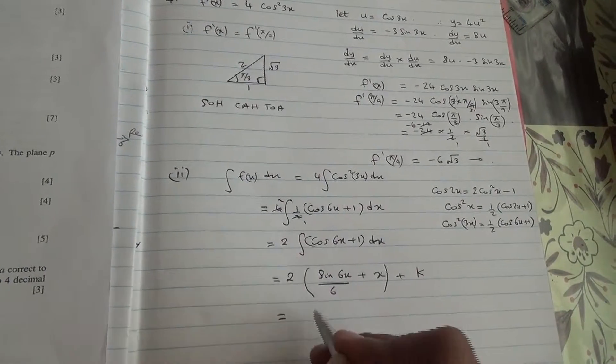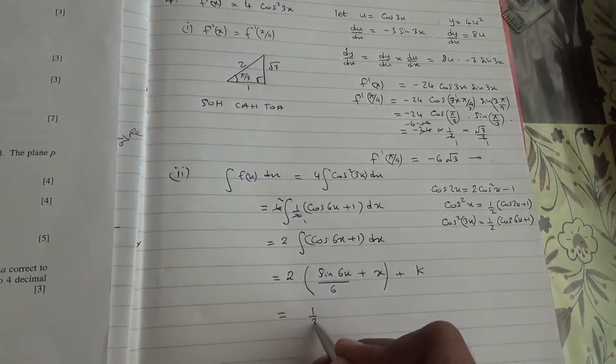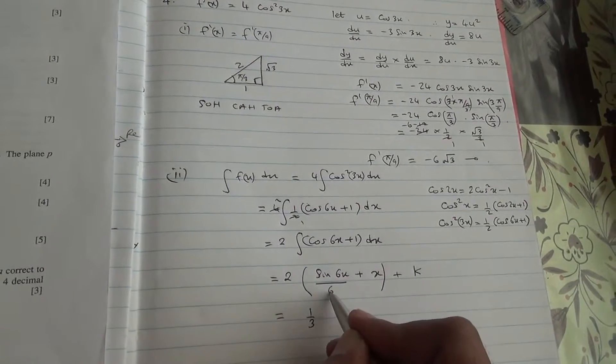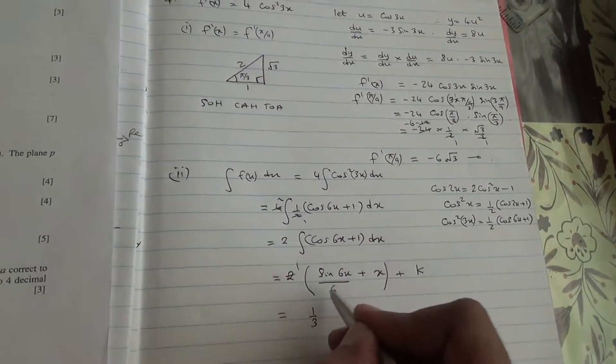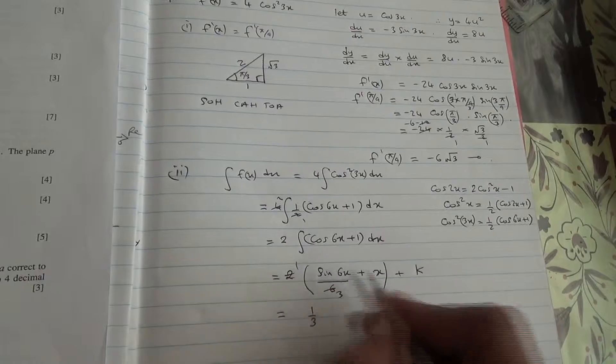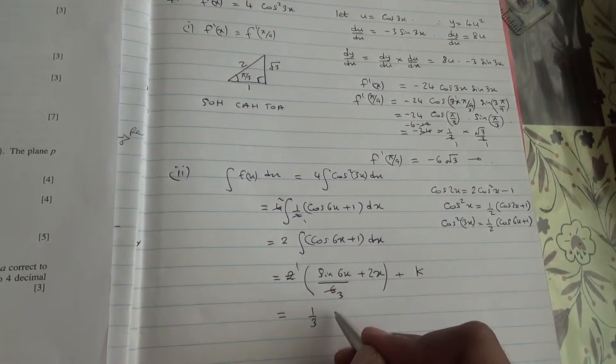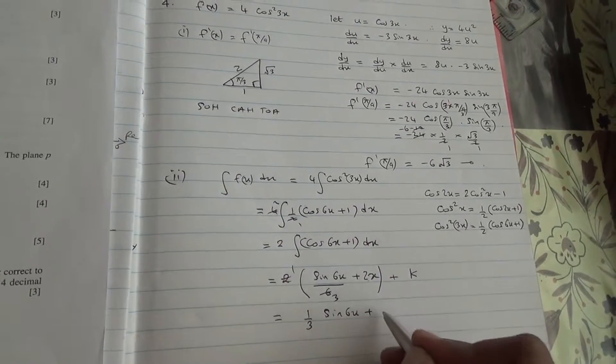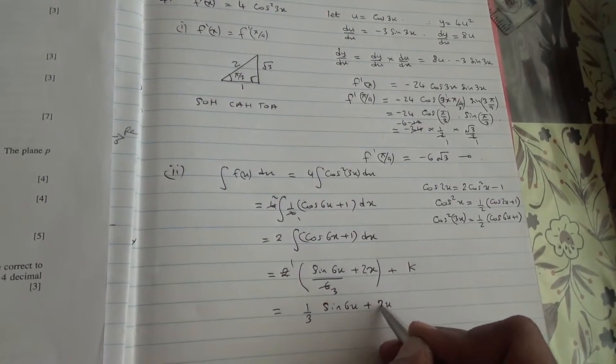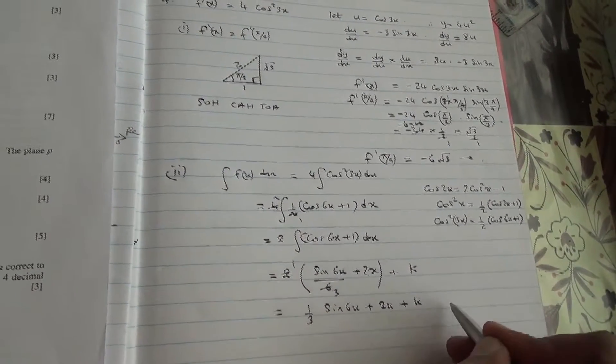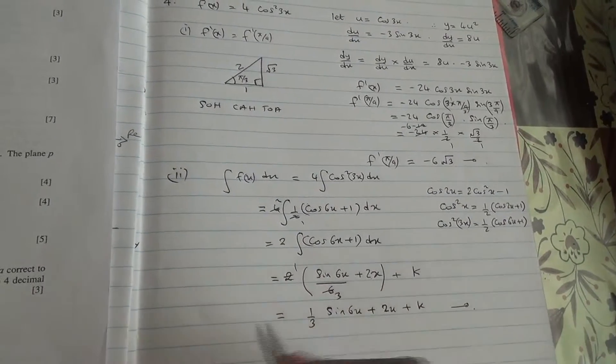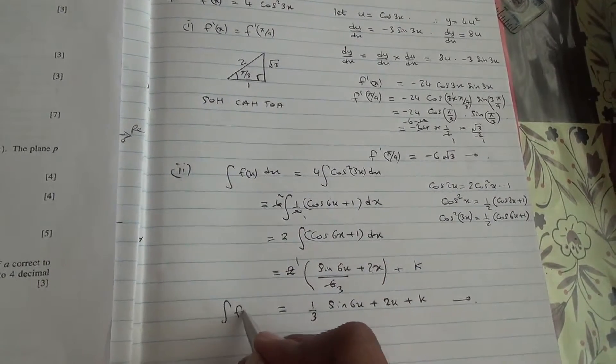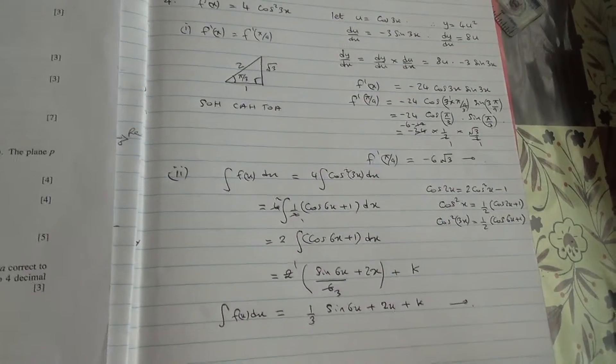So the 2 can go here. It's going to become 1/3, because 2 into 6 is 3. And 2 times x is 2x. So we have 1/3 sin 6x plus 2x plus k. And here we are for the integral of f(x) dx for this question.